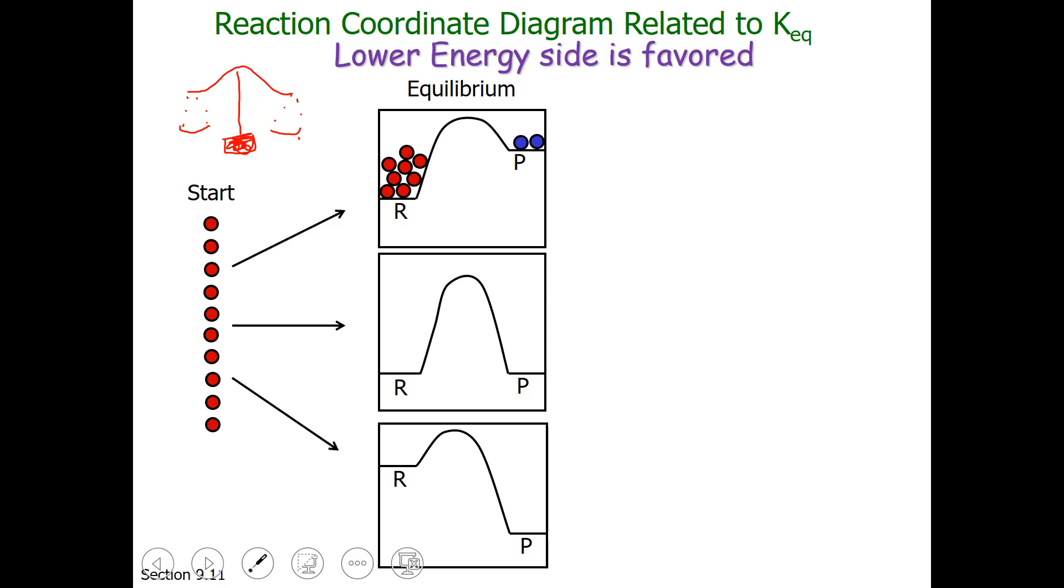Remember that the low energy side is favored. So for our top diagram, we might have 80% of our material as reactant and 20% as product. This is a diagram that has mostly reactant. We would call this a non-extensive reaction, and the equilibrium constant is less than 1.